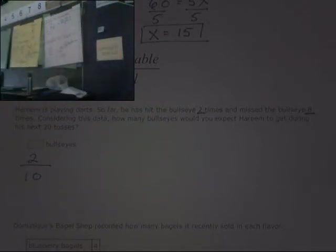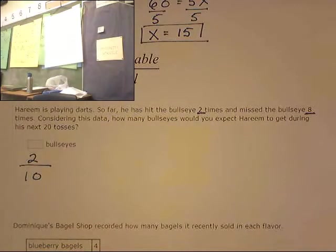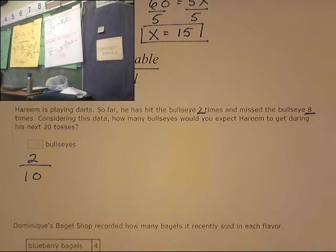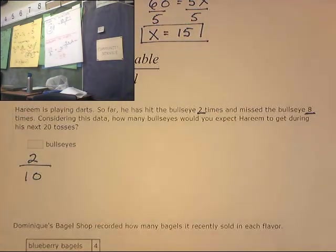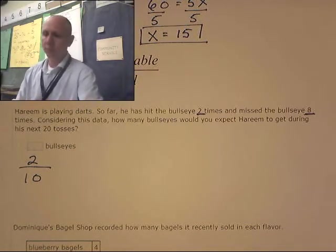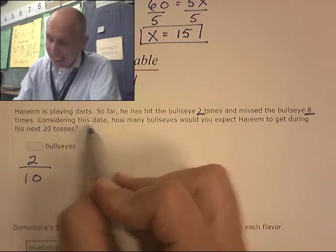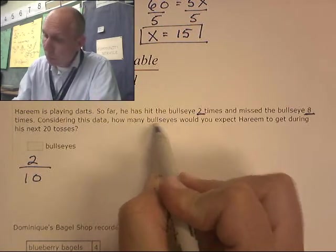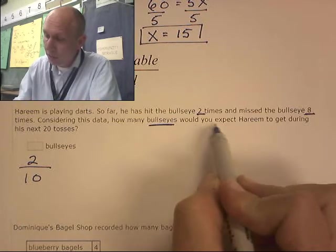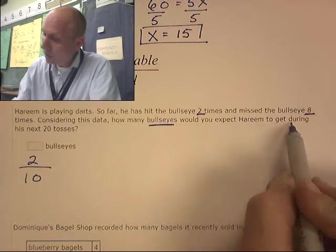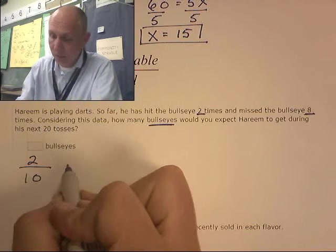Consider this data. How many bullseyes, so favorables, would you expect Hareem to get during his next 20 tosses?